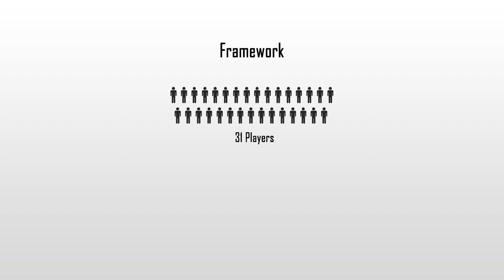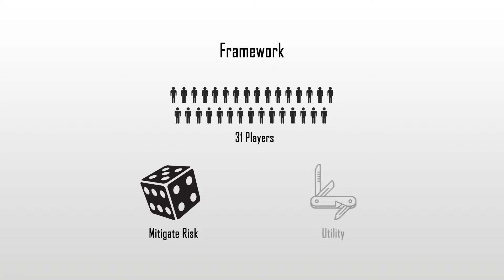So with that, we know our squad is limited to 31 players and that, because of the 48-hour replacement period, it would be a risk not to take three players capable of playing in highly specialised positions like hooker. This in turn highlights the importance of utility players — a player capable of covering two to three positions will be highly valuable, even if they aren't top class in one specific position.